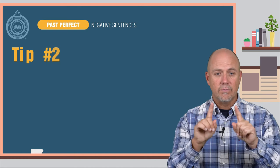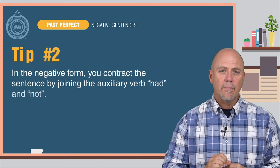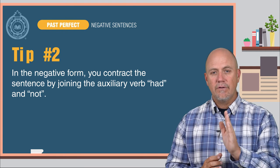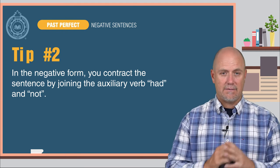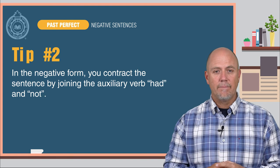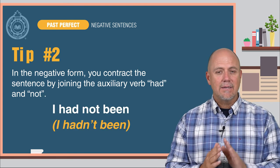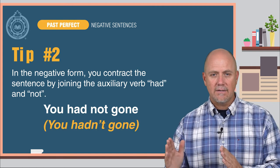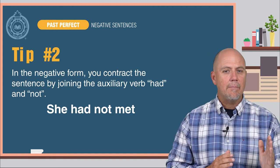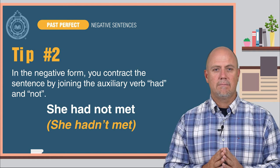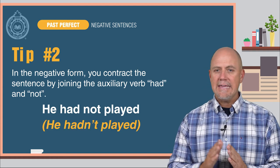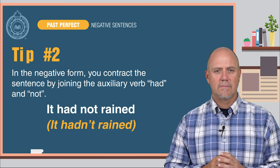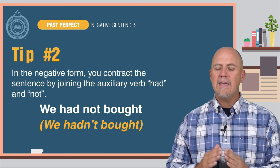Tip number two: in the negative form, you contract the sentence by joining the auxiliary verb had and not. Here are some examples. I had not been — I hadn't been. You had not gone — you hadn't gone. She had not met — she hadn't met. He had not played — he hadn't played. It had not rained — it hadn't rained. We had not bought — we hadn't bought.